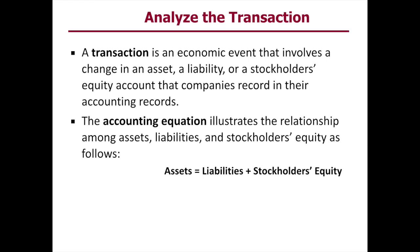Remember that revenues and gains increase retained earnings, whereas expenses and losses and distributions to owners in the form of dividends decrease retained earnings. Ending retained earnings is found by taking your beginning retained earnings, adding your net income — which is made up of your revenues and gains — subtracting your expenses and losses, and then subtracting out your declared dividends.